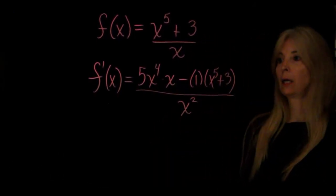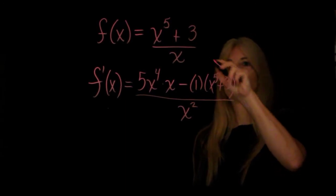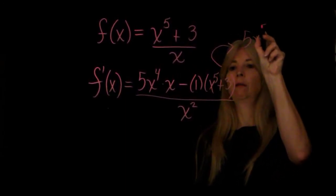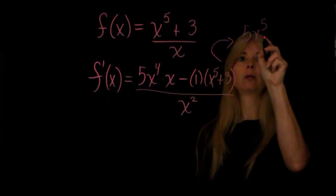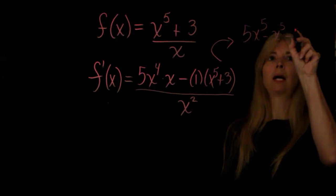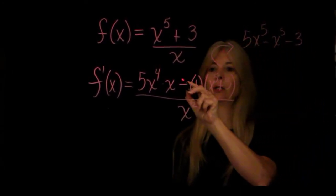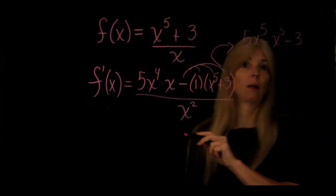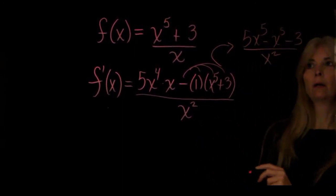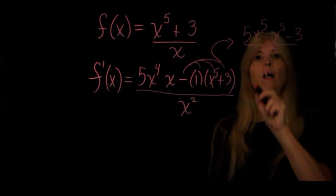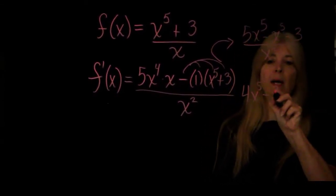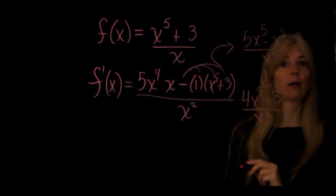And that's it, now you just make it look pretty. Making it look pretty, let's go up here, would be 5x to the fifth. Distribute this negative: minus x to the fifth, minus 3. Do you remember to distribute this negative to all of that? And all over x squared, this would become 4x to the fifth, minus 3, over x squared.